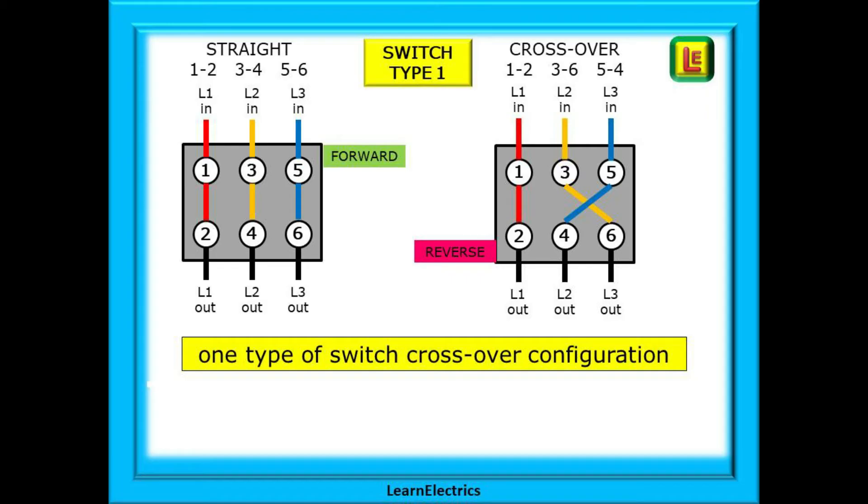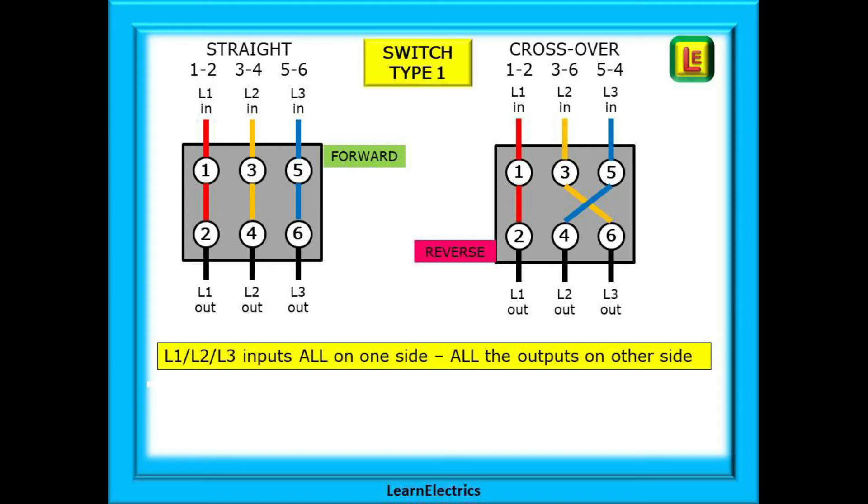With type 1 switches we can have straight through connections 1 to 2, 3 to 4, 5 to 6 for forwards, and for reverse in this switch 1 still goes to 2, but 3 crosses over and goes to 6, whilst 5 crosses over and goes to 4. Notice that the incoming phases L1 in, L2 in, and L3 in are all on one side of the switch, and the output wires to the motor L1 out, L2 out, and L3 out are all on the other side.